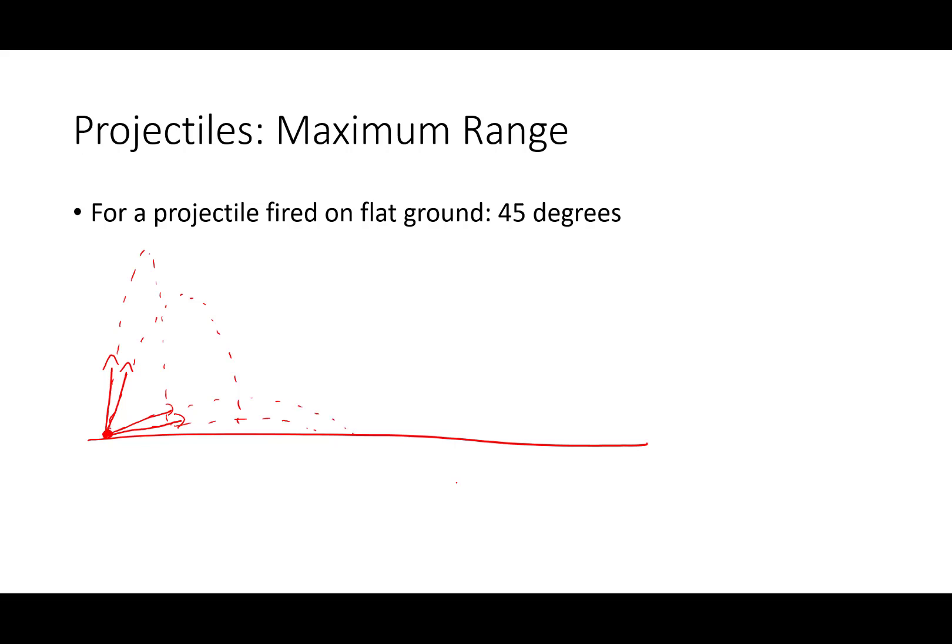And it turns out that these vertical and horizontal velocities are perfectly balanced at an angle of 45 degrees. So 45 degrees is the angle of maximum range. When you fire at 45 degrees, your projectile will land the maximum distance away, assuming it's landing on flat ground.